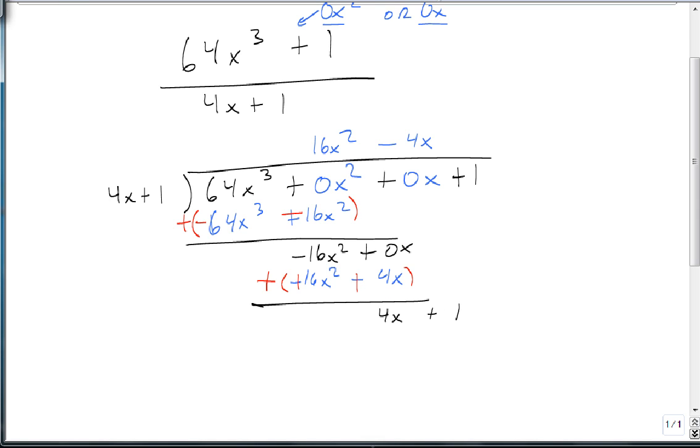Bring down the 1. 4x divides into 4x one time, leaving us with 4x plus 1, which when we subtract it, leaves us with 0. So 4x plus 1 divides into 64x cubed plus 1, 16x squared minus 4x plus 1 times. And so that's our answer. Notice it's even.